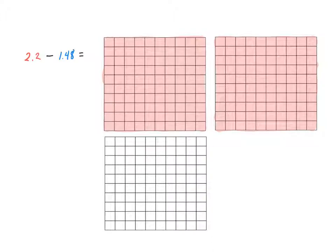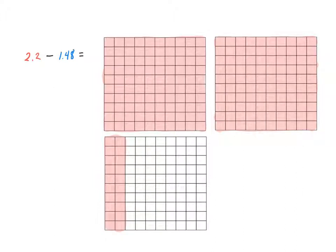I've quickly shaded in two holes. I also need two tenths: one tenth and another tenth — two tenths. I've now modeled the number that I have. Now I want to take away one and forty-eight hundredths. I'm going to use a different color for the part I'm taking away so I can clearly see what part has been removed from this number.